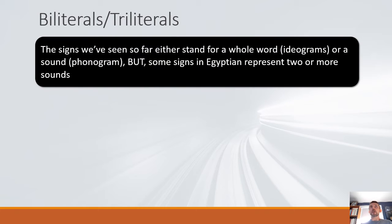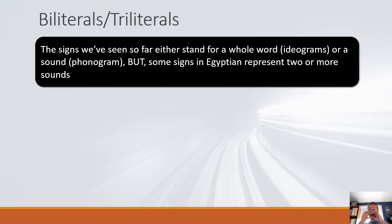So far, when we've looked at the Egyptian language, we've seen a set of signs that can either stand for an entire word, which is an ideogram. We've also seen signs that can stand for sounds. For example, the mouth sign is the one we used last time. The mouth as an ideogram means mouth, but as a sound or a phonogram, it means R — it gives us the sound of R.